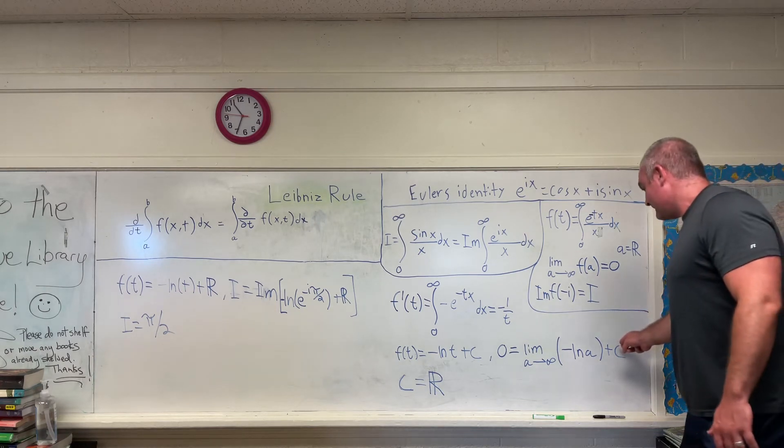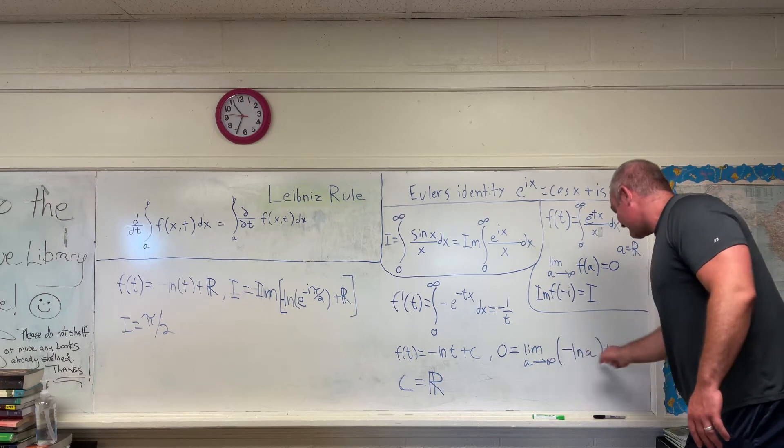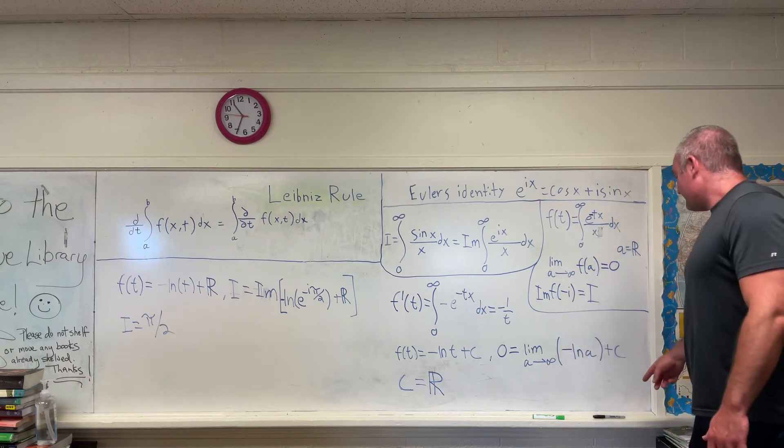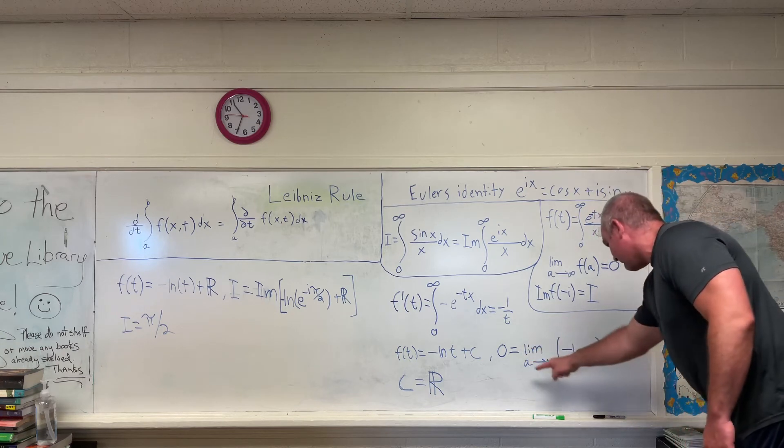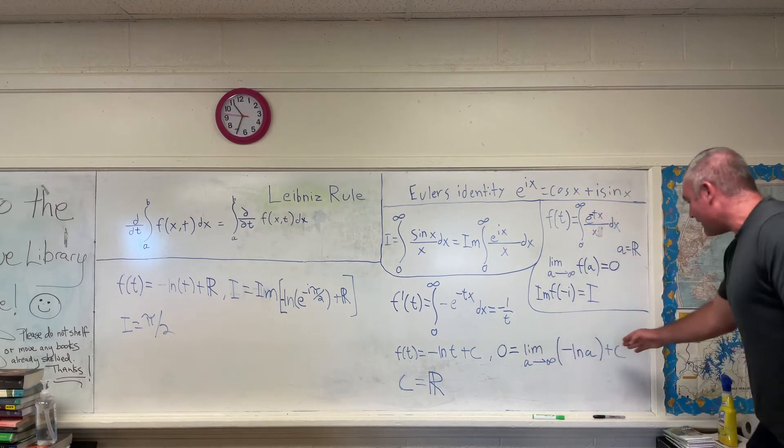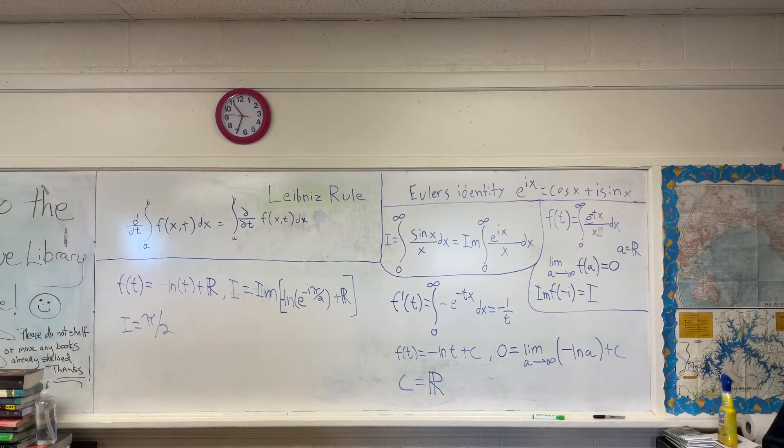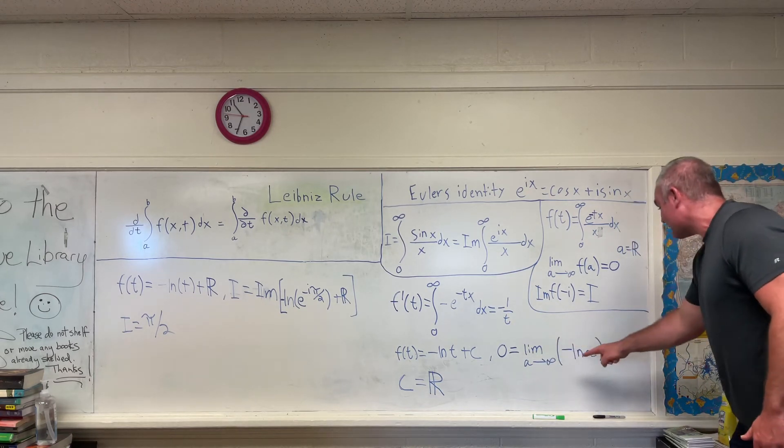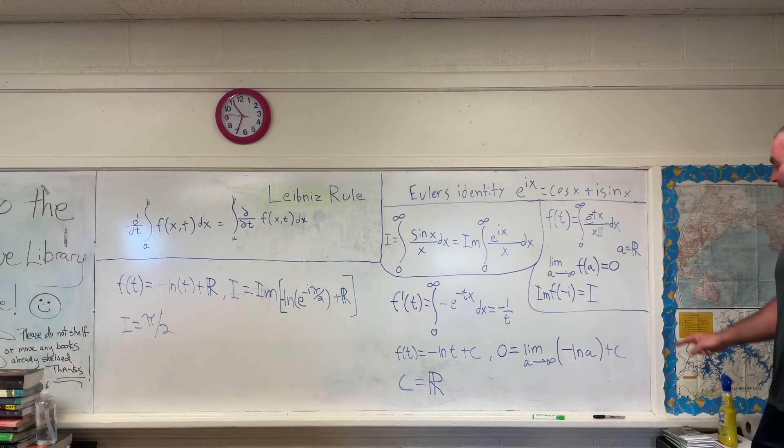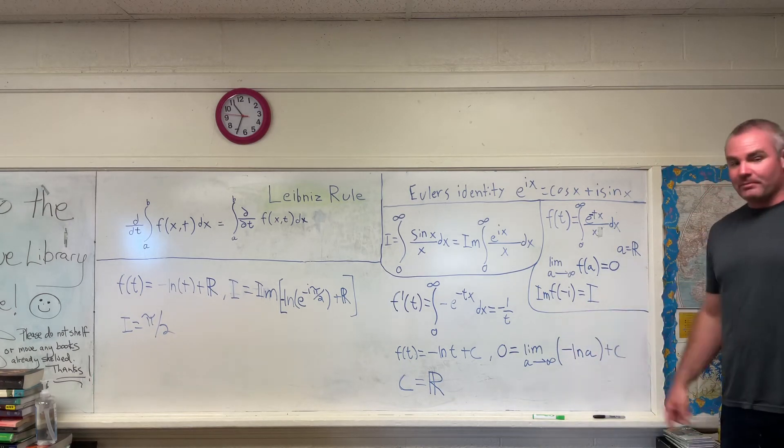As you can see, if you bring this to the other side, you will see that c will be equal to the negative of this. However, since a is a purely real number, this whole expression right here will be a purely real number. So therefore, we know that c will also be purely real.